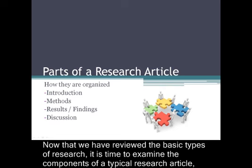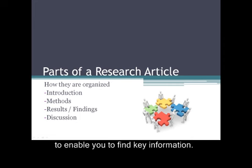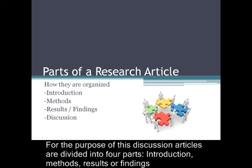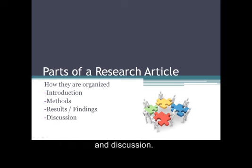Now that we have reviewed the basic types of research, it is time to examine the components of a typical research article to enable you to find key information. For the purpose of this discussion, articles are divided into four parts: introduction, methods, results or findings, and discussion.